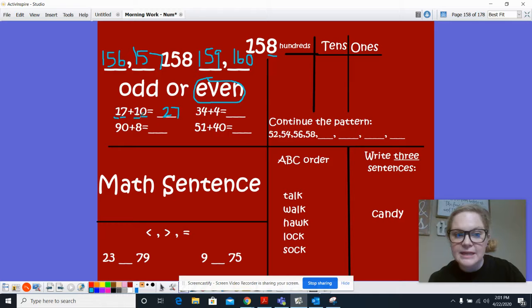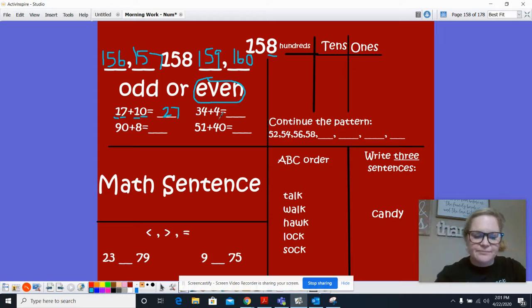17 plus 10 does equal 27. So this is correct. Now 34 plus 4. Hold 34, count up 4. So 35, 36, 37, 38. 34 plus 4 is 38.